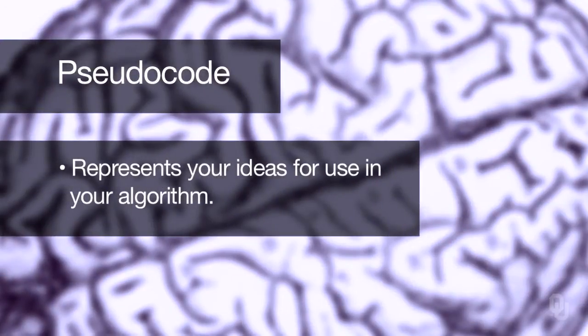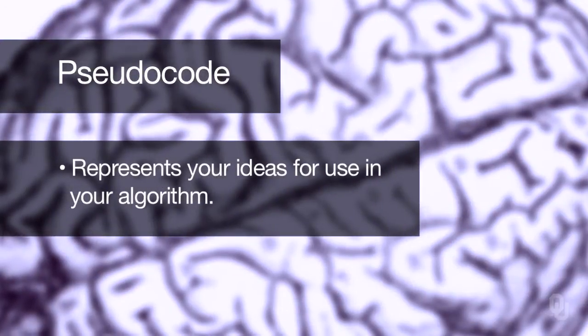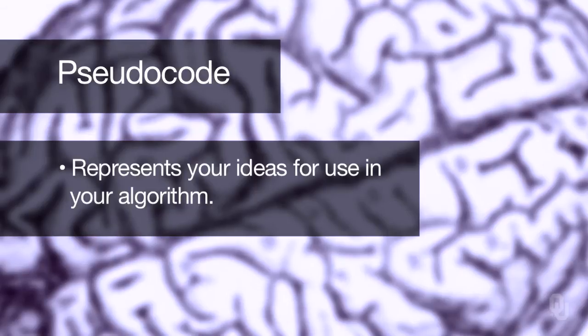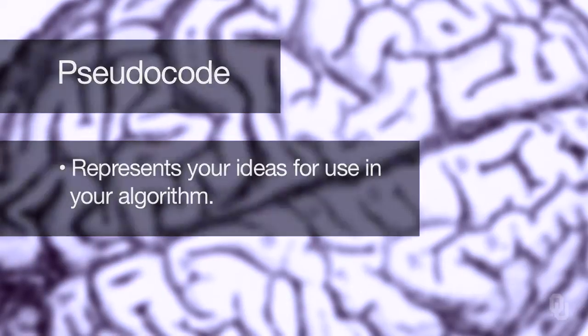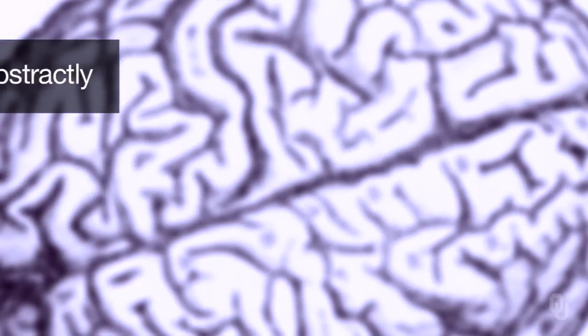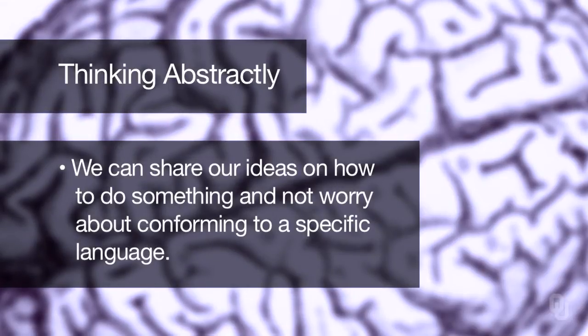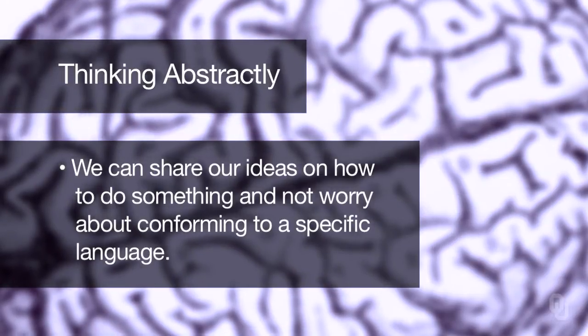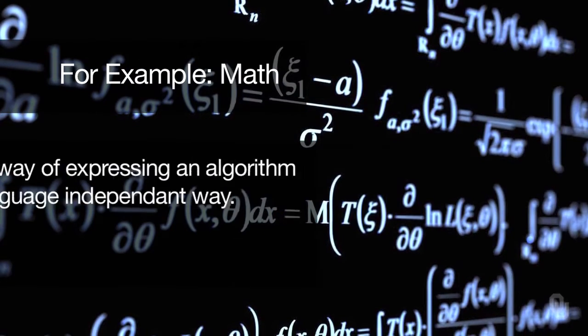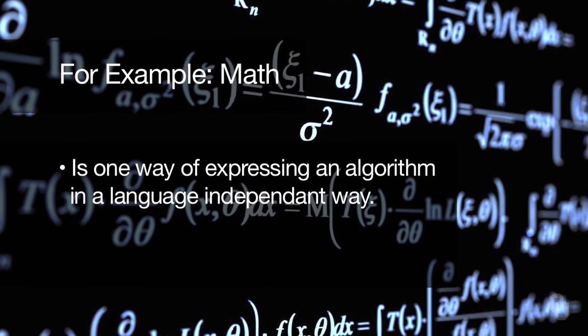Further, we will be looking at something called pseudocode, which is sort of code but not really in any specific language. It enables you to represent your ideas for an algorithm so that you can implement them. By thinking about things at the highest level of abstraction, we can share ideas about how to do something without focusing on how to do it in a specific language. Math is one way of expressing an algorithm in a language-independent manner.